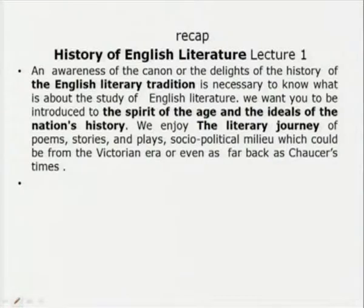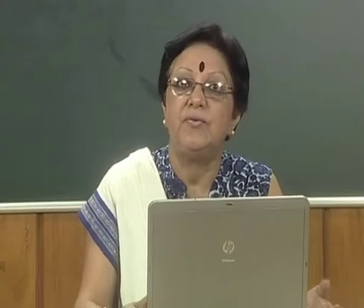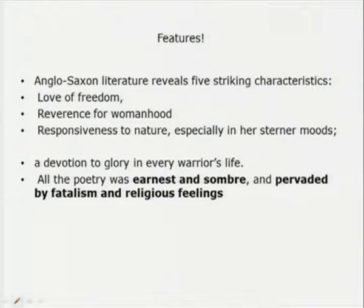Let us have a recap of the previous lecture. In lecture 1, we talked about the need for understanding the background of each literary output and how it adds to the study of English literature. We introduced the spirit of the age, the currents which go in the age, and that helps your appreciation of text. We may go back to Chaucer's time, to the Renaissance, to the Romantic age, and in doing so, we try to see how characteristics add to the development of new trends. In lecture 1, we did Anglo-Saxon literature, the role of Chaucer as the father of English literature, and poetry which was earnest, sombre, pervaded with fatalism and religious feelings.